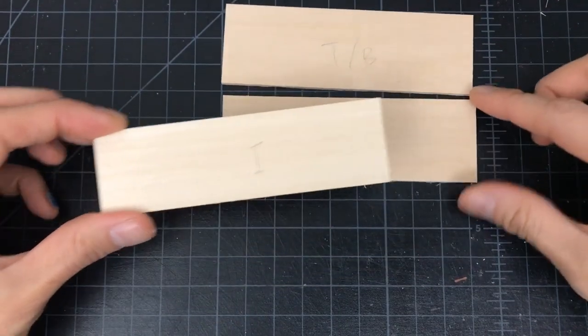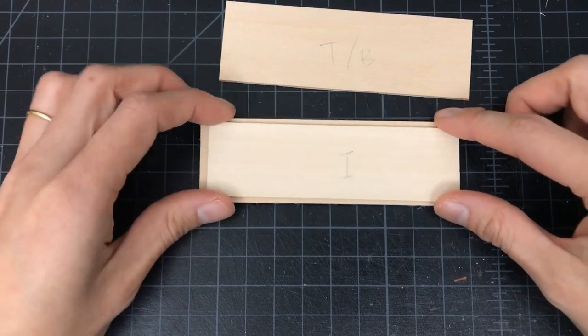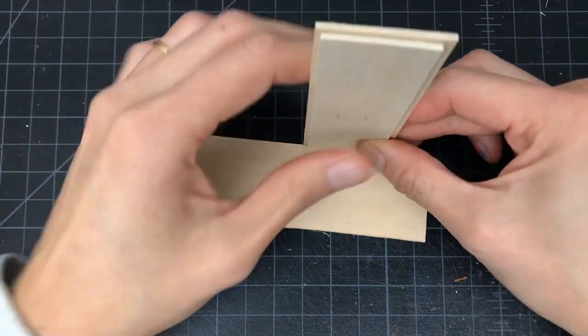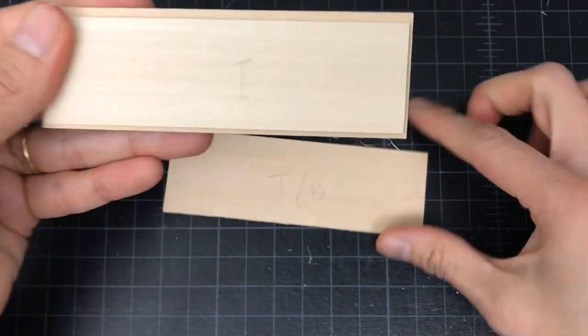Now let's work on the body. Glue the inner bottom piece to the bottom piece. There should be a 1/16th of an inch lip around the three edges.